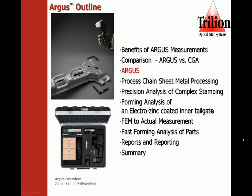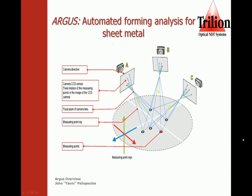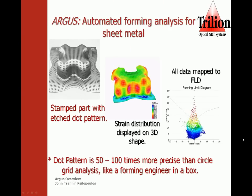The Argus itself consists of image tracking on a triangulation base. As you can see in this image, it's tracking points from three different images. Just like circle grid analysis, the part is electro-etched with a solid dot pattern because it tracks ellipses.